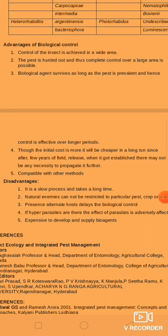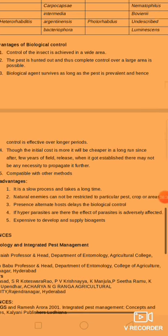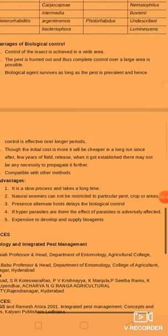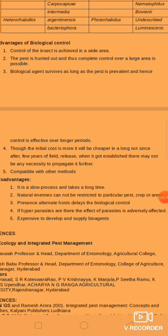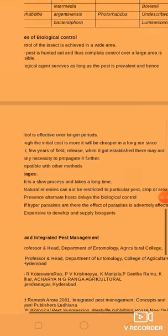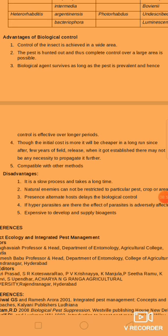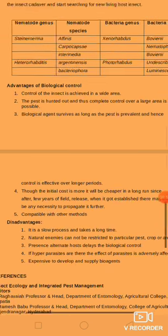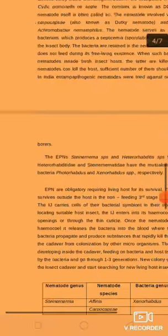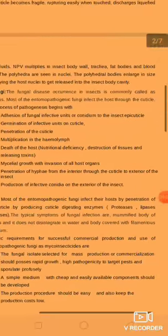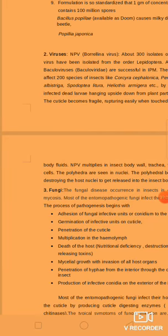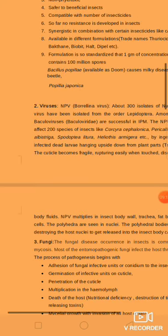It is compatible with other methods. Disadvantages: it is a slow process and takes a long time. Natural enemies cannot be restricted to a particular pest crop or area. Presence of alternate hosts delays biological control. If hyperparasites are present, the effective parasite has an adverse effect. It is expensive to develop and supply bio-agents. In summary, microbial control primarily involves bacteria, fungi, virus, and nematodes. Thank you.